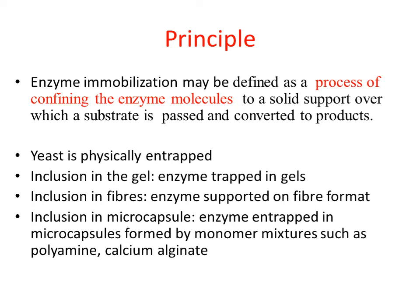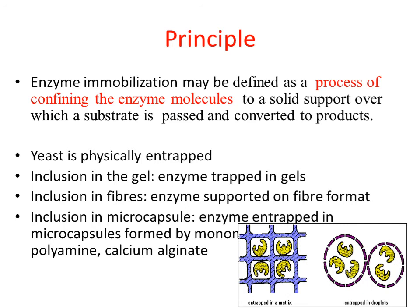In the gel, the enzyme will be trapped in the gel. Inclusion in fiber means the enzyme will be supported on a fiber format. In microencapsulation or encapsulation, the enzyme will be entrapped in microcapsules formed by polymer mixtures such as polyamine or calcium alginate. The enzyme is entrapped in the matrix in the form of a droplet with pores, so the substrate can pass inside, react, and the product can come out. Advantages: it is very simple and easy to perform, and mild conditions are followed. Disadvantages: leakage of enzyme may occur due to wide pore size distribution in the gel, reduced substrate accessibility to enzyme may occur, and sometimes free radicals may be formed causing slight loss in activity.